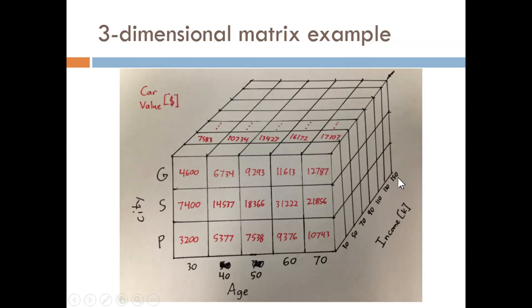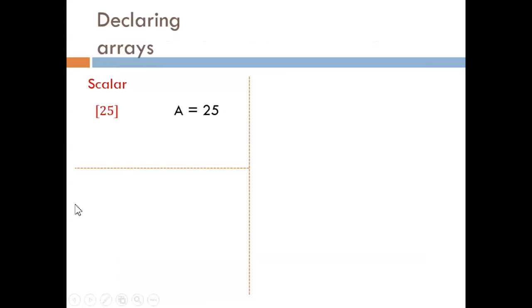As you can see, it is a bit of a trip trying to visualize these higher dimension matrices. Now try imagining what 4D would look like. How can we declare or store to a variable each of these array types?